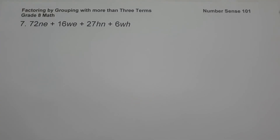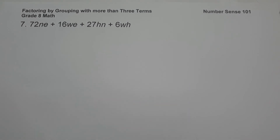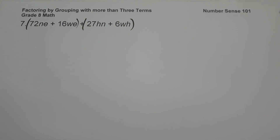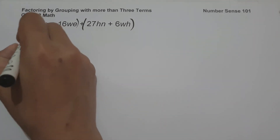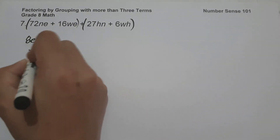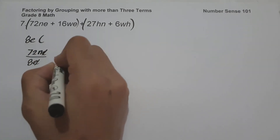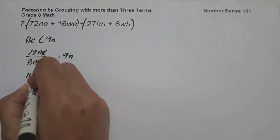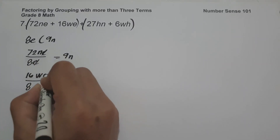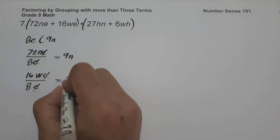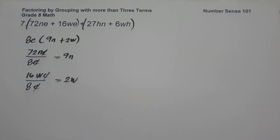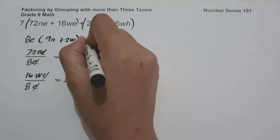On our last example, we have 72NE plus 16WE plus 27HN plus 6WH. Let us factor this by group. The greatest common factor of 72NE and 16WE is 8E. So 72NE divided by 8E: cancel E, 72N divided by 8 gives 9N. Then 16WE divided by 8E: cancel, giving 2W. The GCF of 27HN and 6WH is 3H.